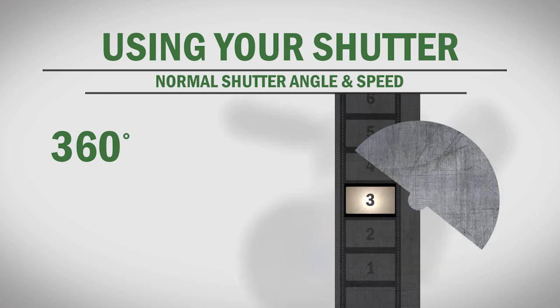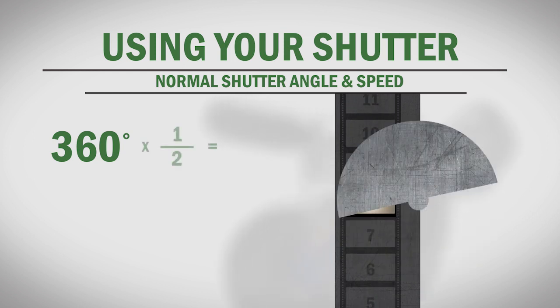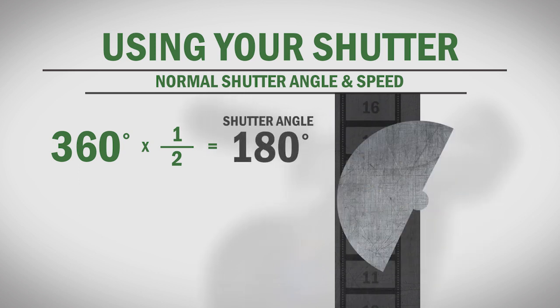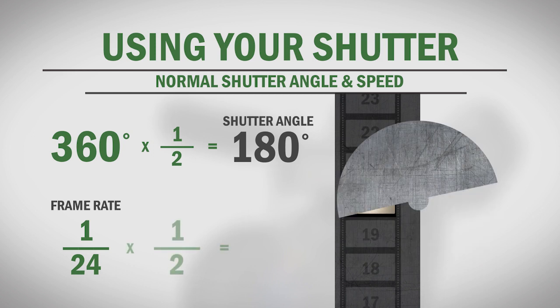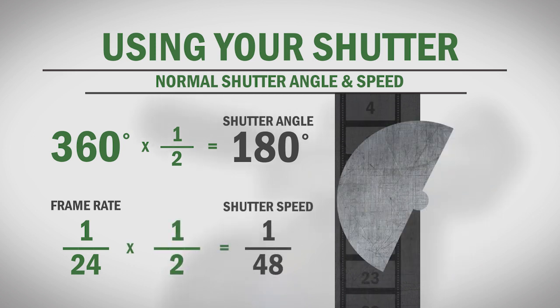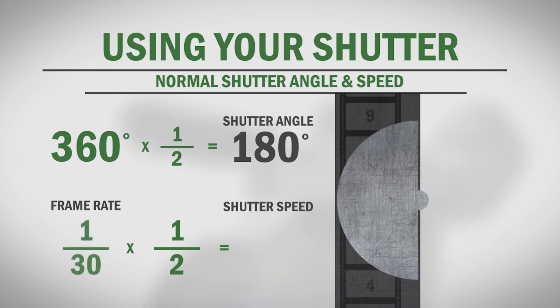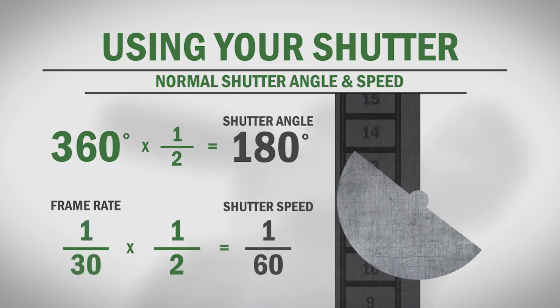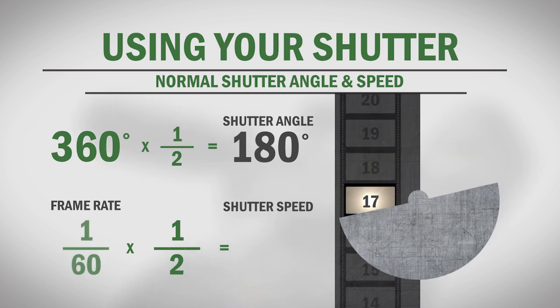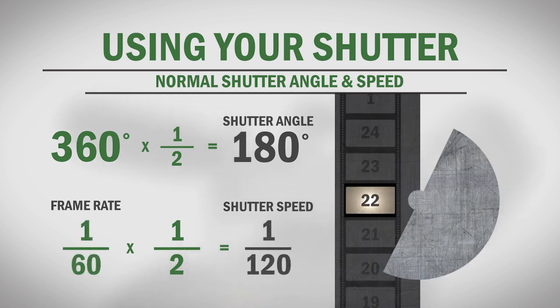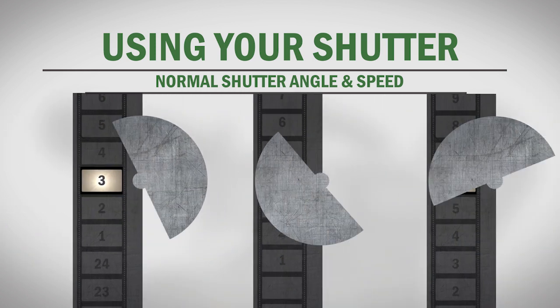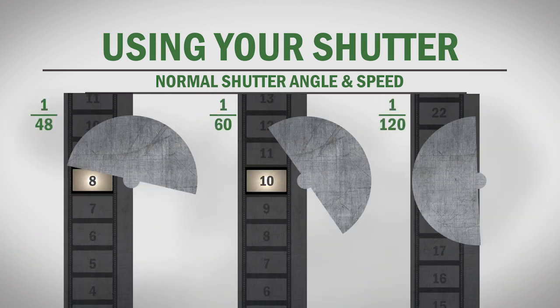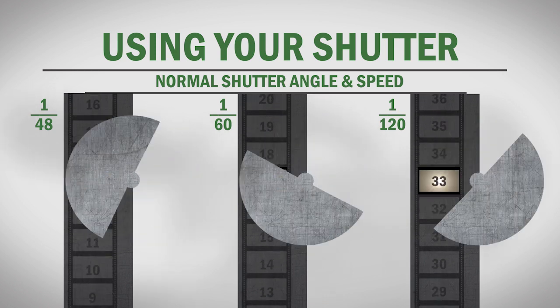When shooting 24 frames per second, a 180-degree shutter will produce natural motion blur that's similar to what we see with our naked eye. Notice that if you take 360 degrees and multiply it by 1/2, the result is 180. Also notice that if you multiply the frame rate of 1/24th of a second by 1/2, the result is 1/48th of a second. This applies to other frame rates as well. If you're shooting 30 frames per second, a normal shutter speed would be 1/60th of a second, and for 60 frames per second, a normal speed would be 1/120th of a second. A camera with a shutter angle setting would remain at 180 degrees, but the virtual shutter would move faster along with the frame rate, keeping the motion blur natural.